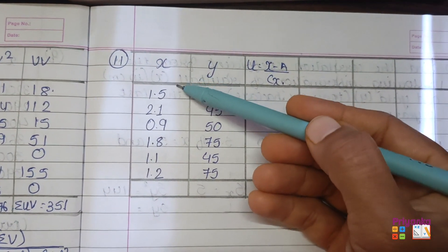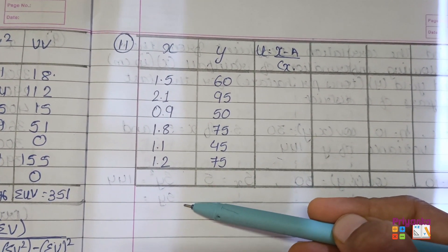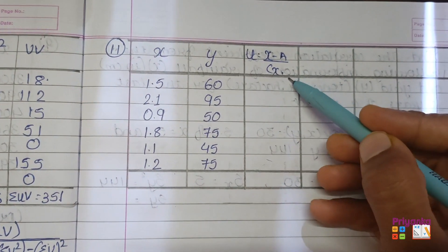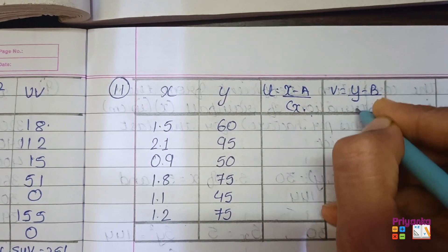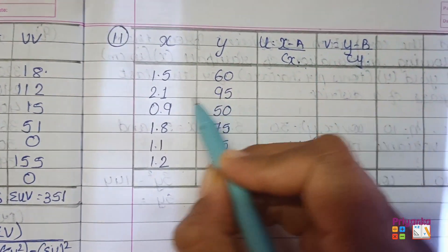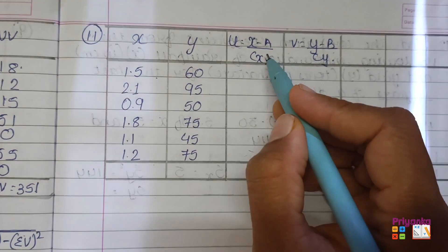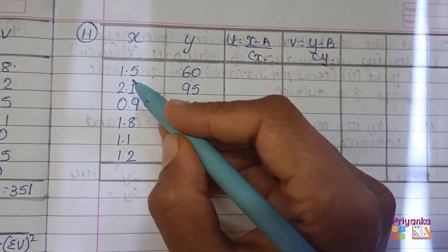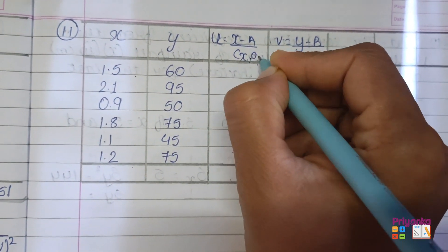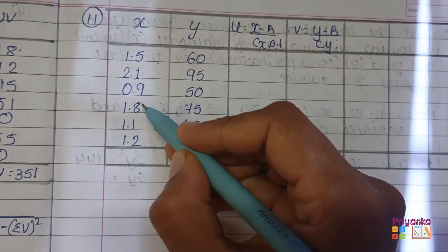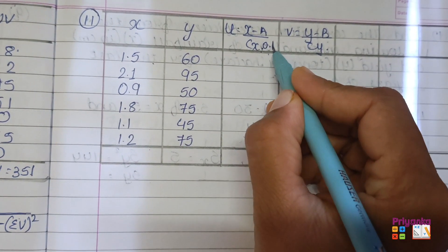Now here you can see the information of x is given in decimals, so we are not going to find x̄ or ȳ directly. We will use the formula of u and v, that is u = (x - a) / cx and v = (y - b) / cy. In the last question number 10, the answer was 0.5, so there we kept cx as 0.5. But here you can see there are multiple numbers, so for such kind of numbers you have to take cx as 0.1, since it does not come in any single common table. So here you will take cx = 0.1.